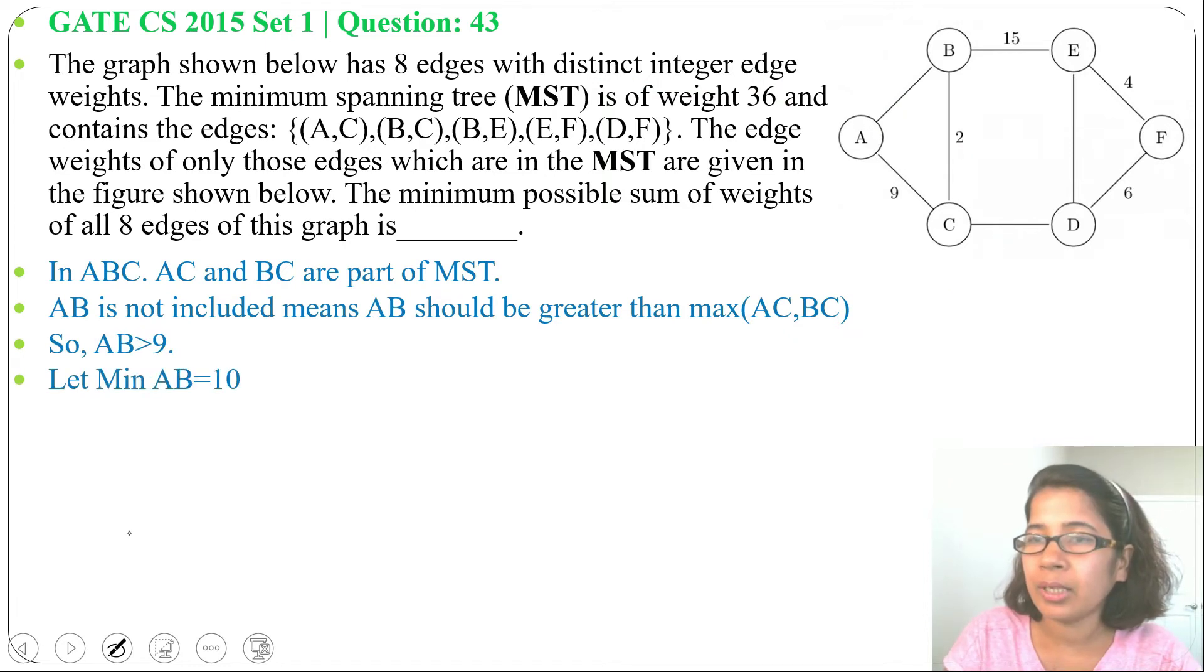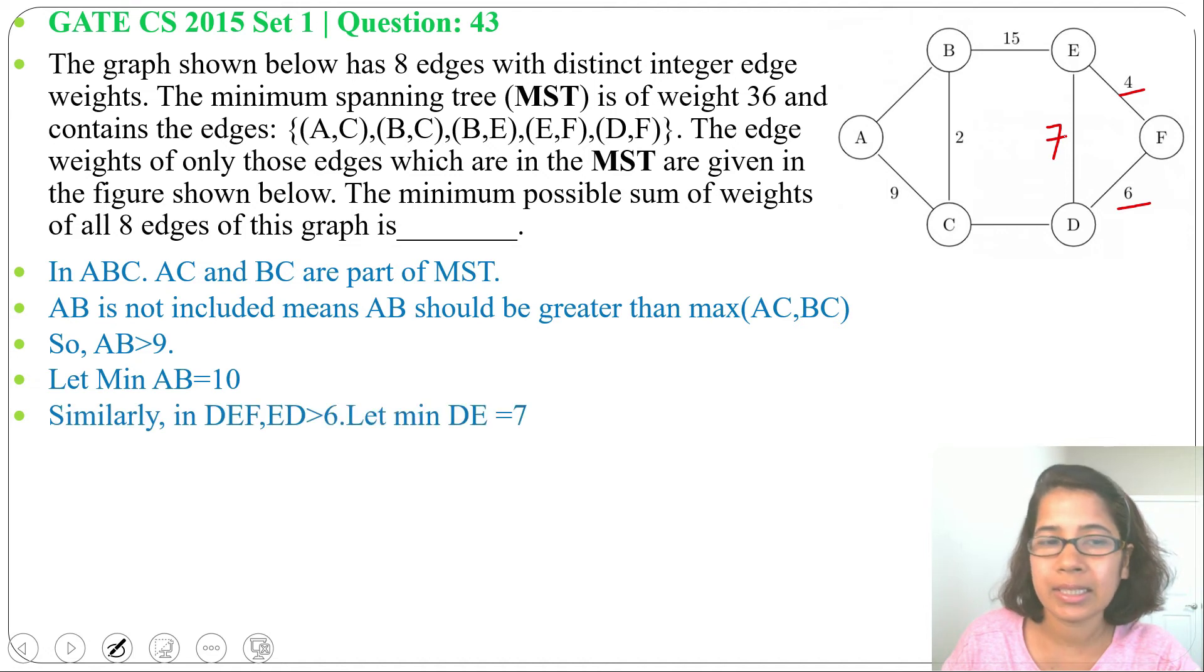Next check for EDF. Here EF weight is 4, DF weight is 6. So ED weight will be 7. So it should be greater than 6. Minimum value greater than 6 is 7.